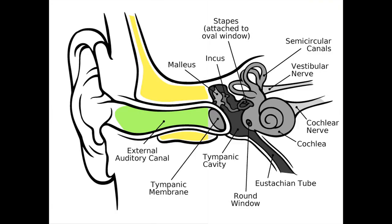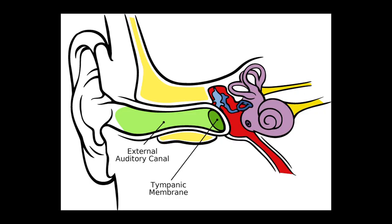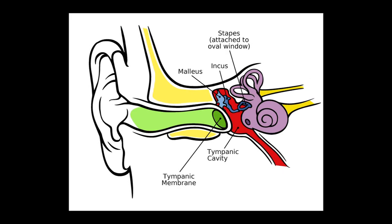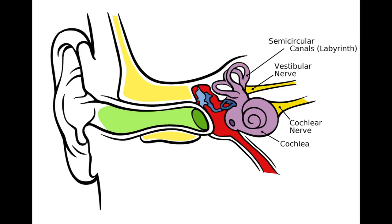The ear has three components: the external ear, the middle ear, and the inner ear. The external ear is sometimes called the auricle or pinna. Looking inward, the external ear includes the concha and the ear canal up to the tympanic membrane. The middle ear starts at the tympanic membrane and ends on the bony floor of the middle ear. The inner ear contains the cochlea and the labyrinth. The concha has the following components.